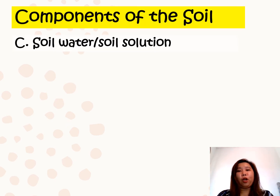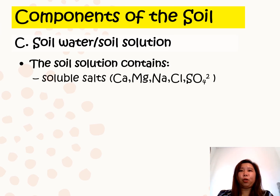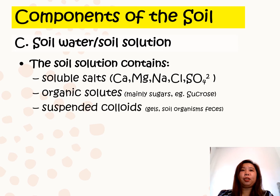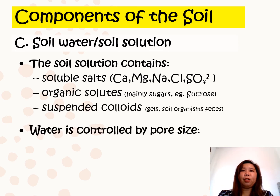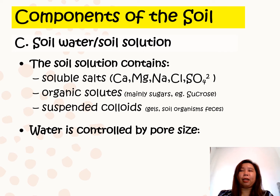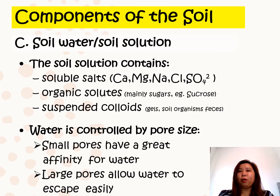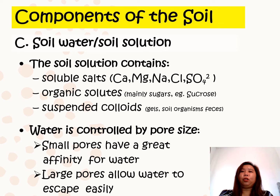Another component of the soil is the soil water, also called soil solution. It contains soluble salts, organic solutes, and suspended colloids. This component is largely controlled by pore size: small pores, such as micropores or mesopores, have a great affinity for water, while large pores or macropores allow water to escape or leak.